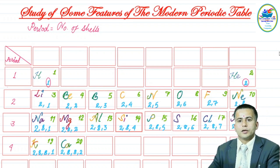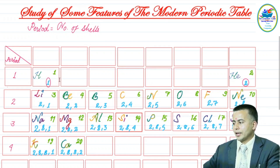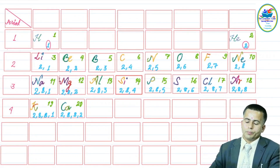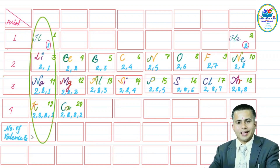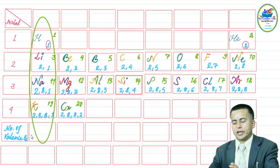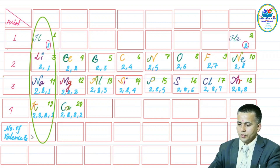If an atom contains five shells, it will belong to period five, and the same rule applies for all others. Now let us analyze the group number assignment using valence electrons. Looking at the first vertical column — Group IA — you can see hydrogen, lithium, sodium, and potassium all have one valence electron each.